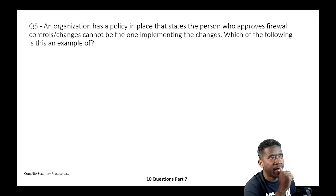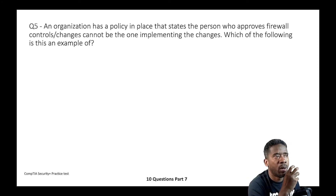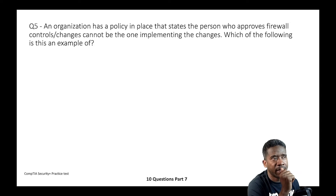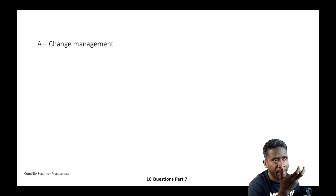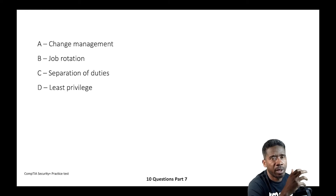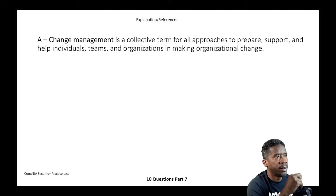Question five: An organization has a policy stating that the person who approves firewall control changes cannot be the one implementing those changes. Which of the following is this an example of? A) Change management, B) Job rotation, C) Separation of duties, or D) Least privilege.